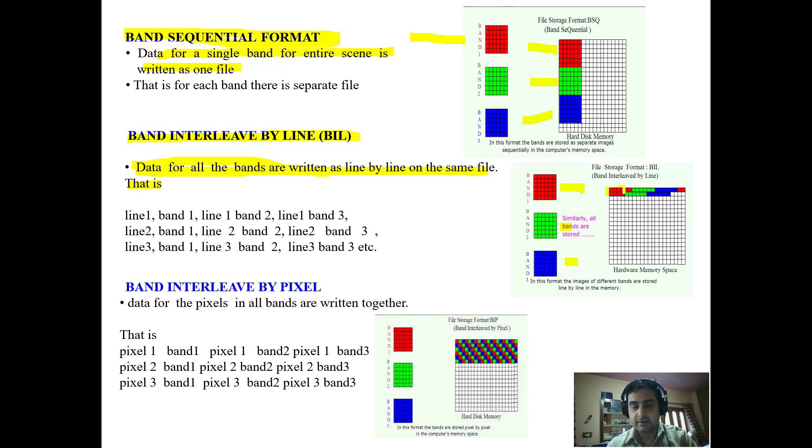You can see here these are bands 1, 2, and 3. The information regarding band 1 is written in the first line, then data of band 2, then data of band 3, then again data of band 4 if we have more than three bands. It will have band 4, band 5, band 6, then repeated in the second line we have band 1 data, band 2 data, band 3 data.